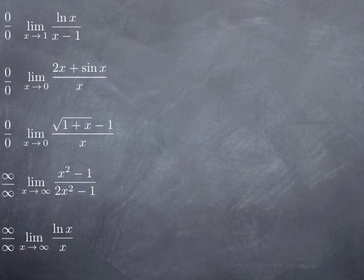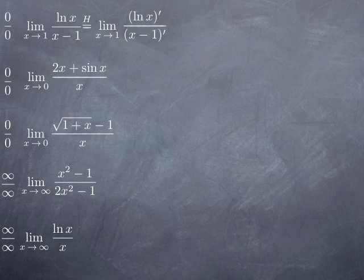Now let's go back to the examples from the first slide. We've already observed that both the top and the bottom are 0 or both infinity in each case, and the conditions are satisfied since we're taking quotients of differentiable functions. For the first example, applying L'Hôpital's rule, the limit at 1 of ln(x)/(x−1) equals the limit at 1 of the quotient of derivatives. The derivative of ln(x) is 1/x; the derivative of (x−1) is 1. So we get the limit of (1/x)/1, which is just 1/x, and the limit at 1 of 1/x is 1.